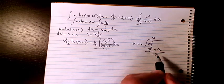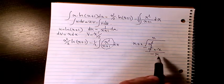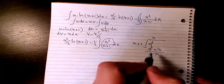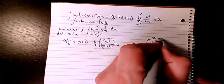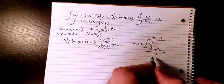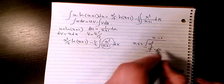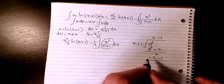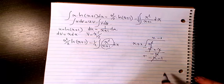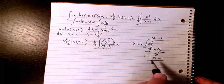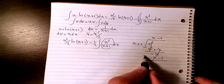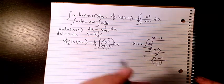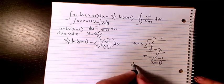Then the next term is negative 1. Negative 1 times x is negative x, and negative 1 times positive 1 is negative 1. When you subtract, that term cancels to 0, leaving a remainder of negative 1. So the answer is x minus 1 with remainder negative 1.